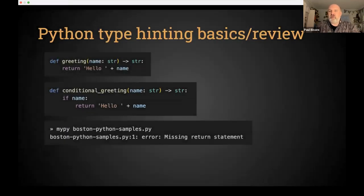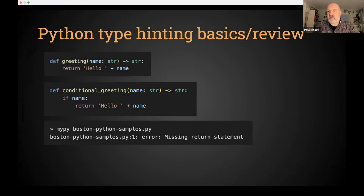Just a quick review of Python type hinting basics. Here's a simple function that tells Python — or anything caring about annotations — what type the argument it receives is, and what type of value it returns. Python runtime doesn't particularly care about these things, but they lay the foundation for a lot of marvelous tooling.